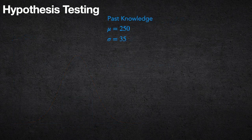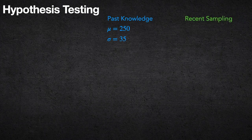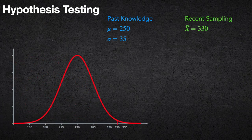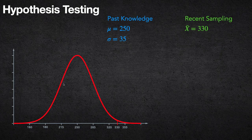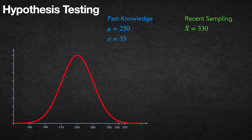We have our past knowledge — the null hypothesis — that the true mean is 250 with standard deviation 35. Say our recent sampling gives us x̄ = 330, much higher than the believed mean. On our curve, 330 sits way off in the right corner with very little probability area, while most of the probability is within one to two standard deviations of 250. So this is a pretty unlikely outcome.